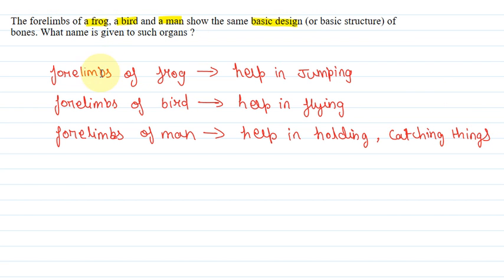Here we can see that the forelimbs of these three organisms have the same basic design. But if we see their function, it is different. So what are these organs called? They are called homologous organs.